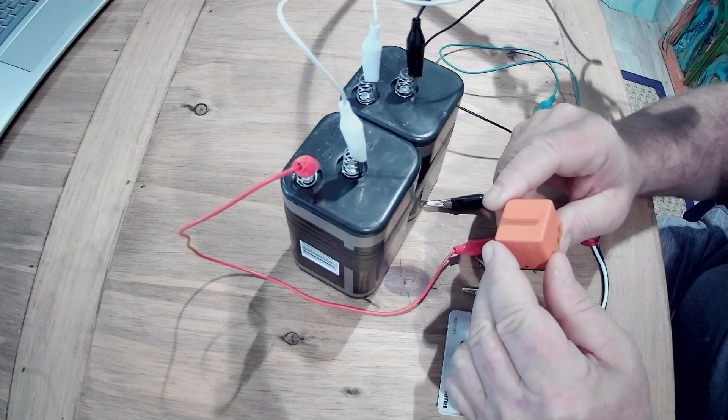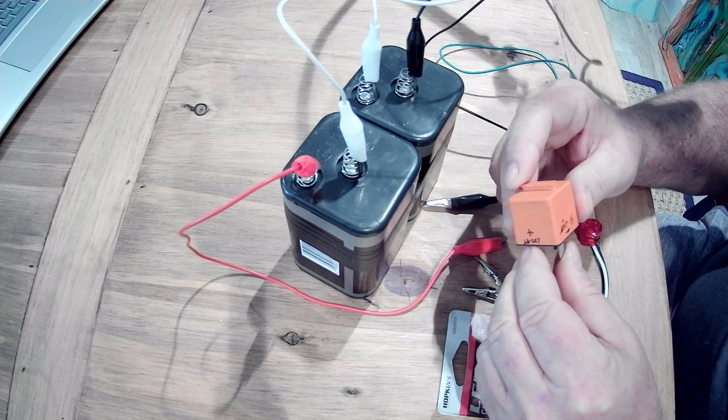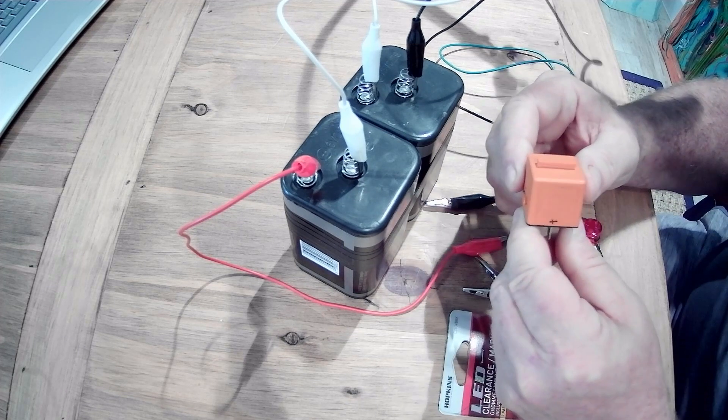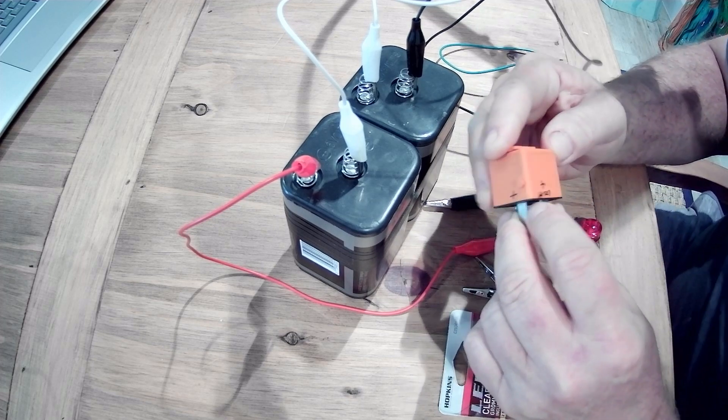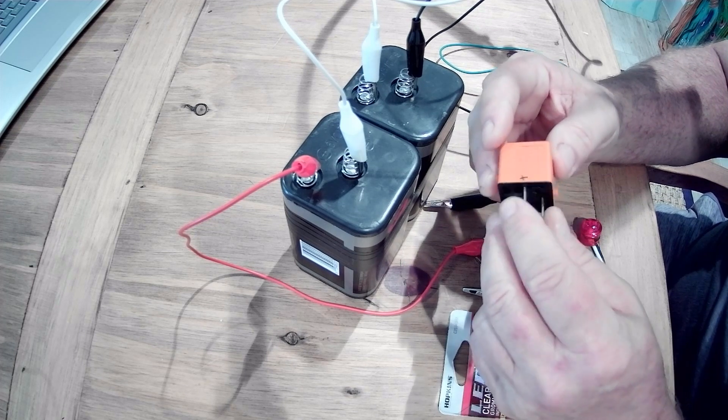Hi, this is Adam with the BMW repair guide. Today we are going to test a relay. This is actually from a fuel pump on a 1995 8 series, a very common relay in BMWs, older BMWs.